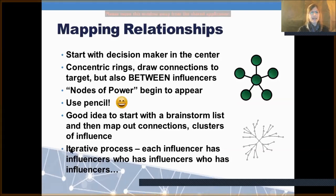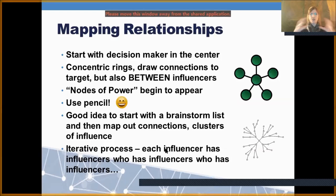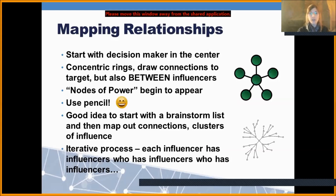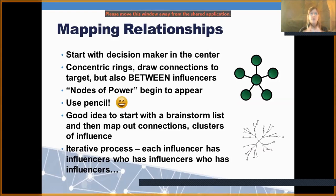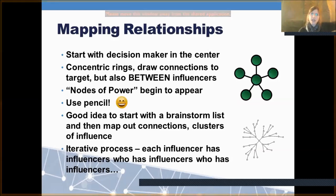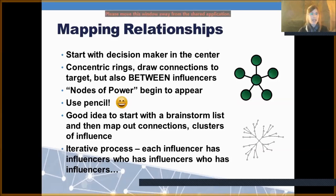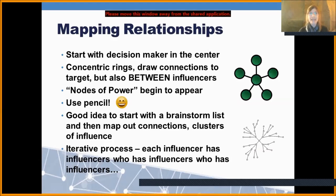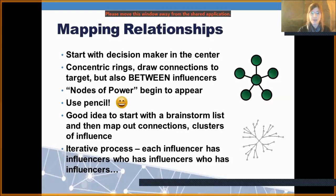This is an iterative process — starting from that center decision maker, each influencer has their influencers, who have their influencers, and eventually you're looking at an influencer that somebody in your group knows. That's when your asset map bridges your power map and it starts to get really exciting. It's then useful to catalog every single member of your organization — who do they know, what organizations are they part of? Parent networks are amazing and often have cross-cultural, cross-political quality.